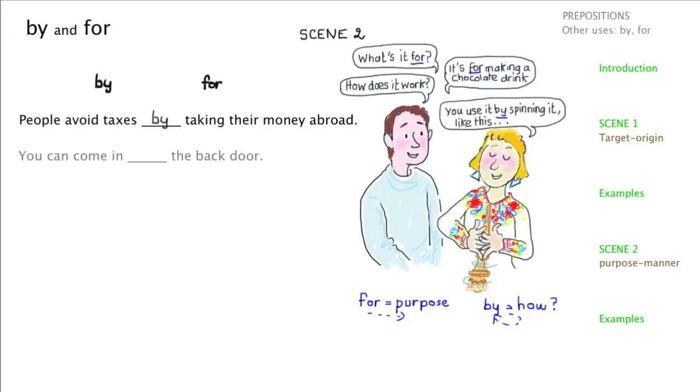And here's the next sentence: You can come in the back door. Again that seems to be the method, how it is done. So again we'll take a by and we'll drag it down. You can come in by the back door.